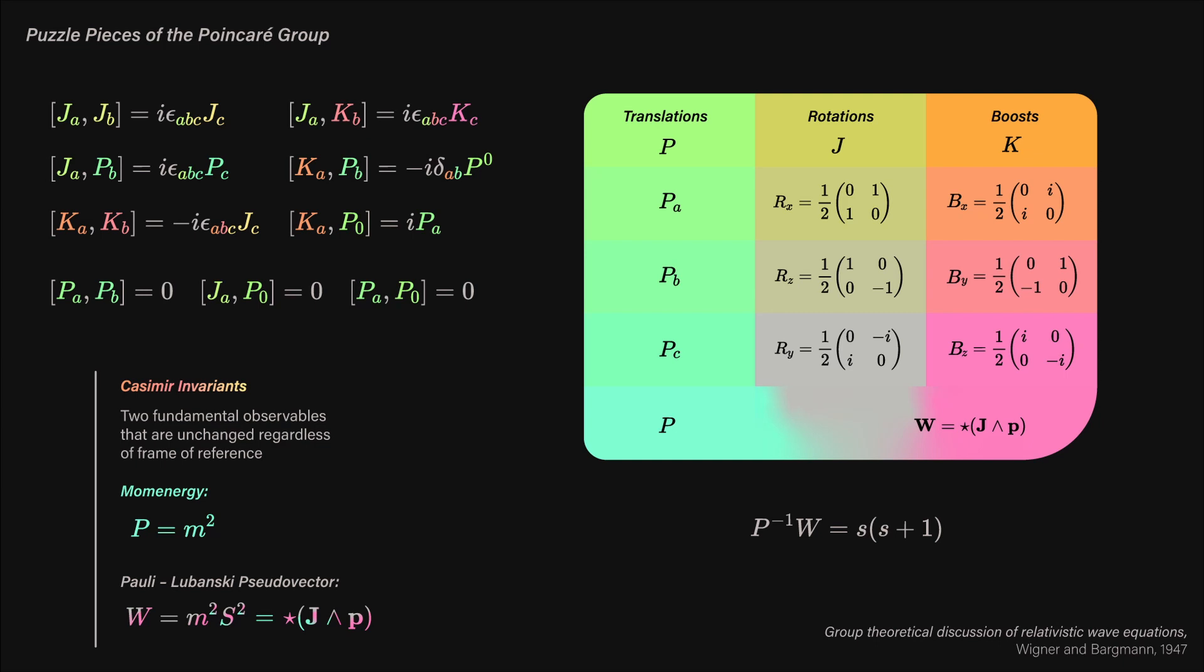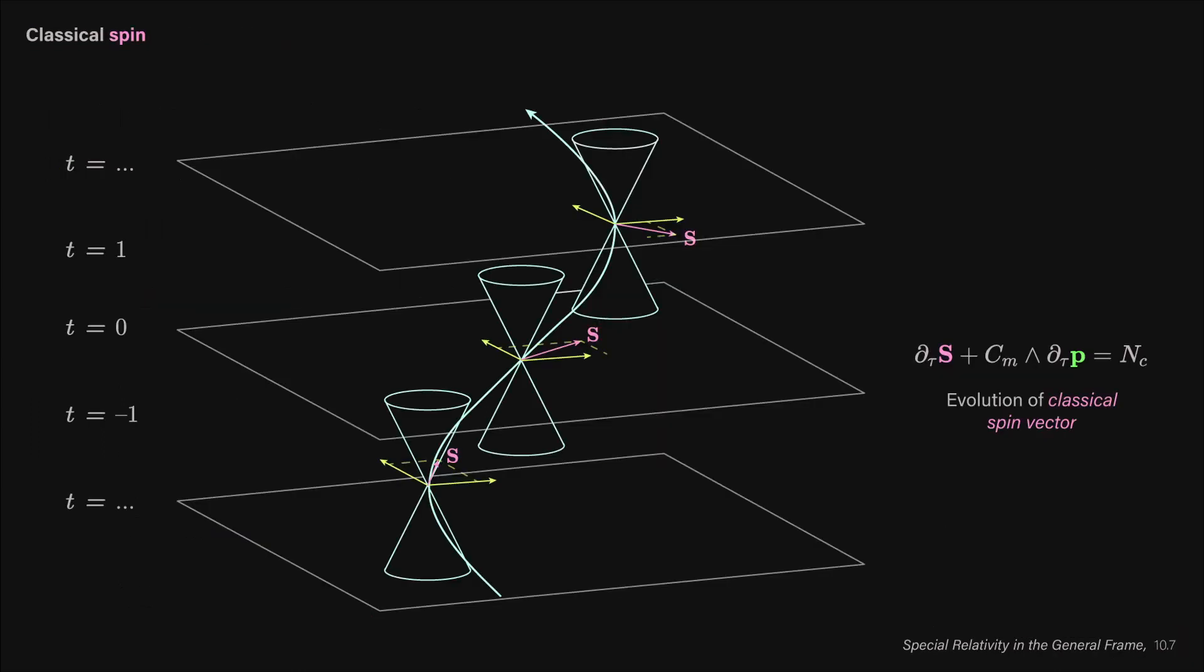And the second thing is the Pauli-Lubanski pseudo-vector. The momenergy is related to linear motion, and the Pauli-Lubanski pseudo-vector is related to rotational motion. You can see it is a dual of a bivector, so it is related to quantity conserved due to angular momentum, and indeed, it is a measure of a particle's intrinsic angular momentum as it sweeps through spacetime. This is often called spin.